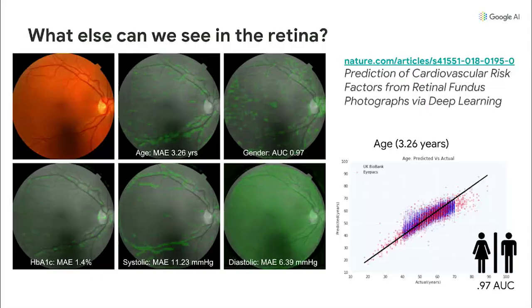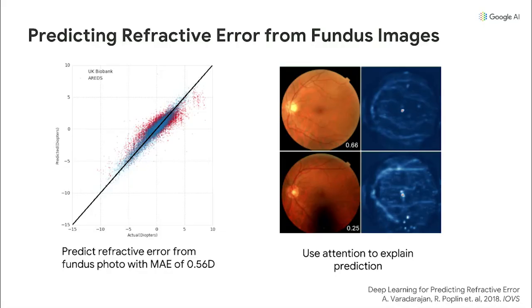We can predict cardiac risk on par with the Framingham score. We can predict HbA1c — almost a bloodless blood test. We can predict whether you're a smoker, we can predict your age, we can even predict refractive error. This is an area where ML is seeing things that have never been seen before. I was at lectures at Harvard Medical School — the doctor was using a stethoscope and blood pressure detectors, tools that are a hundred years old. Perhaps with every physical, you'll get a quick retinal picture and a whole health, neuro, and cardiac assessment.